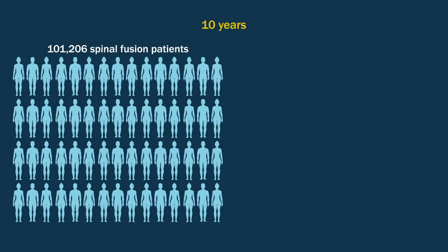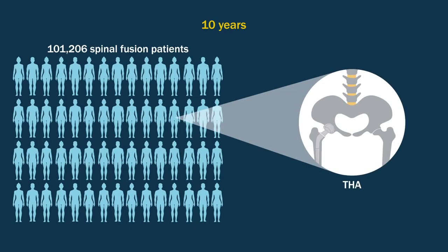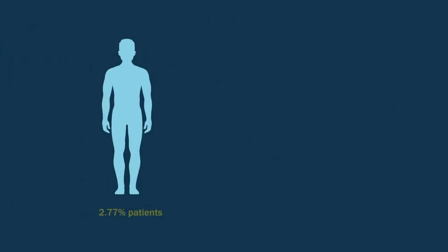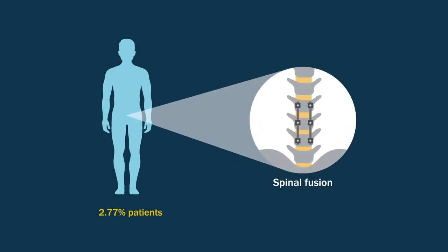They analyzed 10 years of data to determine how many patients went on to have a total hip replacement and what the risk factors were. Their results showed that 2.77% of the spinal fusion patients required a primary hip replacement.